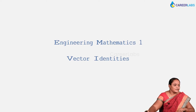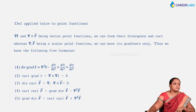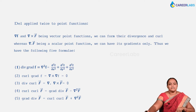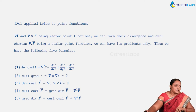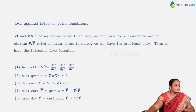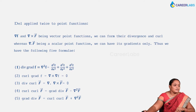In this video we are going to learn about the vector identities. Here del applied to twice two-point functions. Del f and del cross f vector being vector point functions, we can form their divergence and curl, whereas del dot f vector being a scalar point function we can have its gradient only. Thus divergence of grad f is del squared f, which equals ∂²f/∂x² + ∂²f/∂y² + ∂²f/∂z². Curl of grad f equals del cross (del f) = 0. Divergence of curl f equals 0. Curl curl f vector is gradient of divergence f vector minus del squared f vector. Grade divergence f vector is curl curl f vector plus del squared f vector.